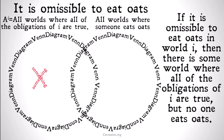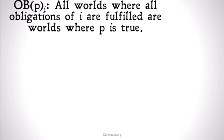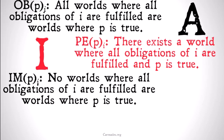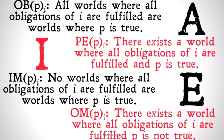To make this clearer, let's directly relate this to categorical logic. 'All worlds where all obligations of I are fulfilled are worlds where P is true' — that's obligatory that P, corresponding to an A statement. Permissible that P — 'there exists a world where all obligations of I are fulfilled and P is true' — corresponds to an I statement. Impermissible that P — 'no worlds where all obligations of I are fulfilled are worlds where P is true' — corresponds to an E statement. And omissible that P — 'there exists a world where all obligations of I are fulfilled and P is not true' — corresponds to an O statement.